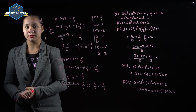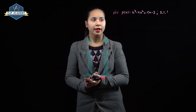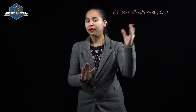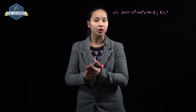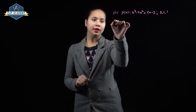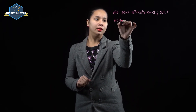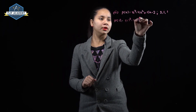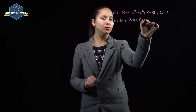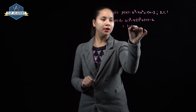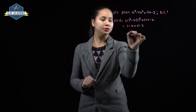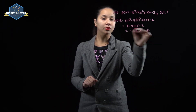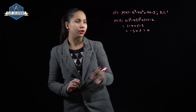In the second part, p(x) = x³ - 4x² + 5x - 2 is given, and we need to check if 2, 1, 1 are zeros of this polynomial. Checking: p(1) = 1 - 4 + 5 - 2 = -3 + 3 = 0. So 1 is a zero of this polynomial.